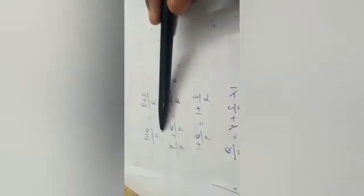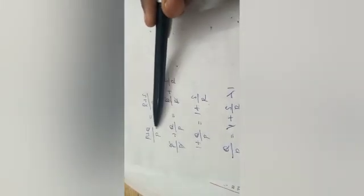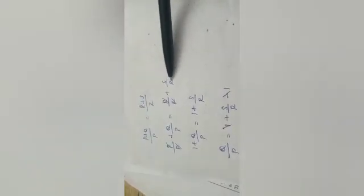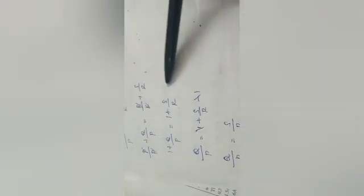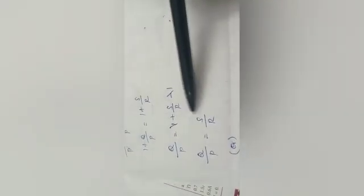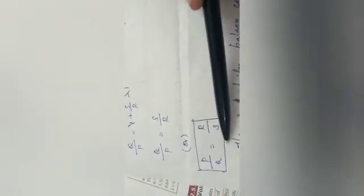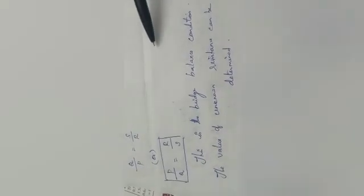Splitting each side: P/P + Q/P = R/R + S/R, which gives 1 + Q/P = 1 + S/R. Cancelling the 1 from both sides: Q/P = S/R, or equivalently P/Q = R/S. This is the bridge balance condition — the final equation. When this condition is satisfied, the unknown resistance can be determined using this relationship.